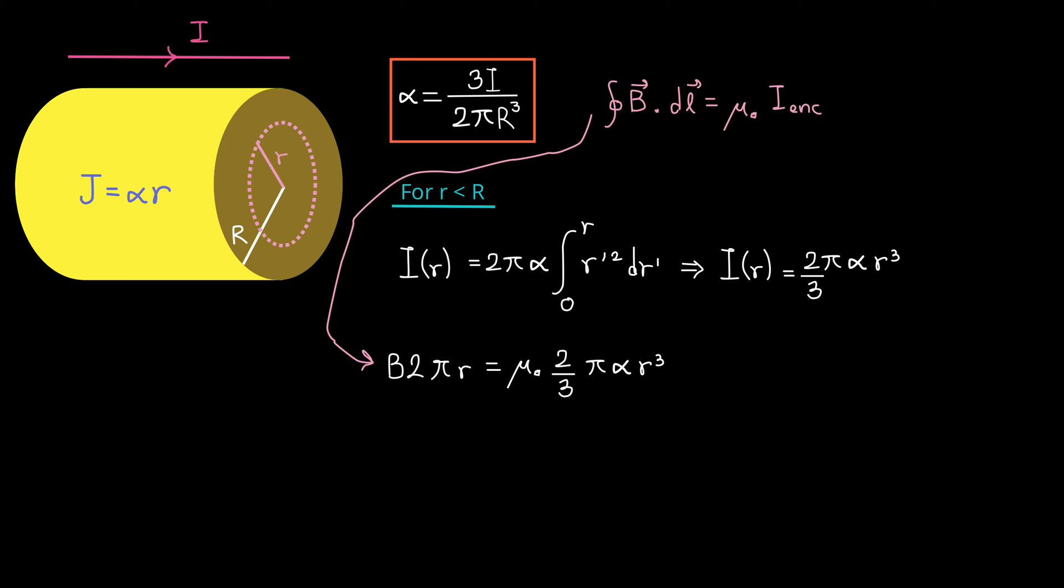The left-hand side, the line integral, simply reduces to B times 2 pi r. Why is that? B is constant at a distance r from the center. It's uniform. And it's tangent to the circular path. So the line integral is simply equal to B times the circumference of the circular path. So that's B times 2 pi r.